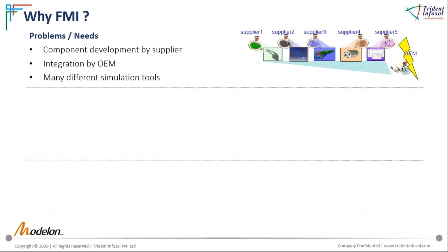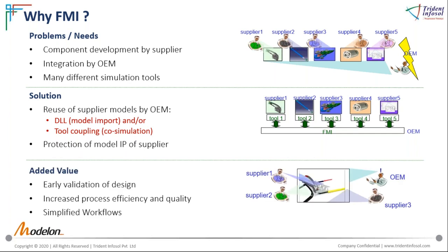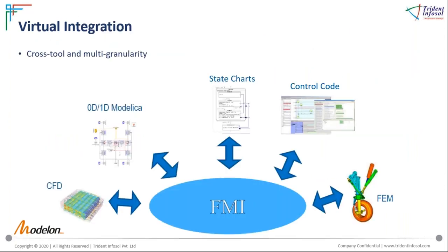One of the main industry challenges is that different suppliers or teams develop components or subsystems, and OEMs must integrate all models. We cannot force everyone to use one tool for all components and simulation analysis. There will be different tools, and teams need the freedom to choose different tools for better product development. The solution should include reusability of models and coupling of tools for system-level simulation, while keeping model details protected. FMI addresses these challenges.